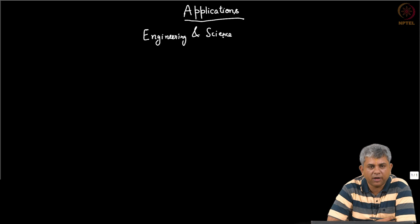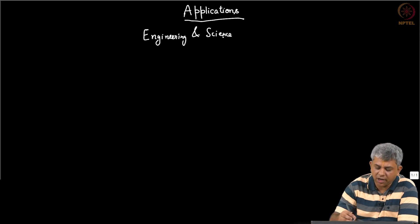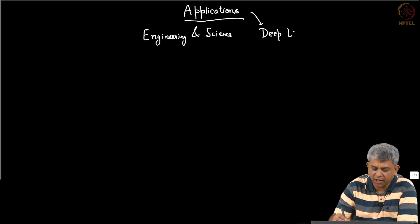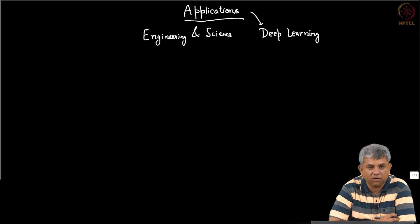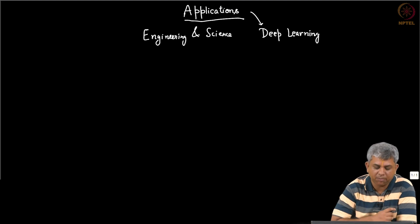Before we go forward, I want to emphasize that we will primarily be looking at deep learning applications. There are of course applications to all the other algorithms that we discussed, such as SVM, PCA, KNN, etc., and they have been used quite extensively in engineering for quite some time — over the last 10 to 15 years in various fields. We will not be covering those; we will just be looking at some modern applications.